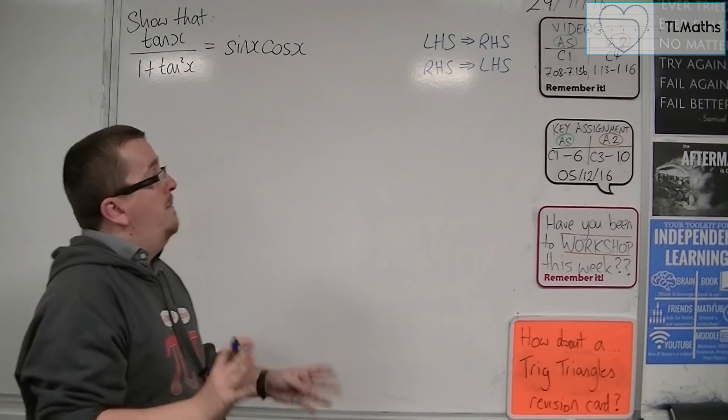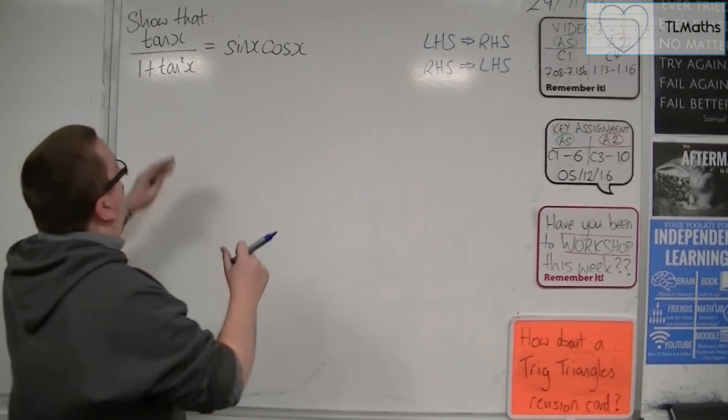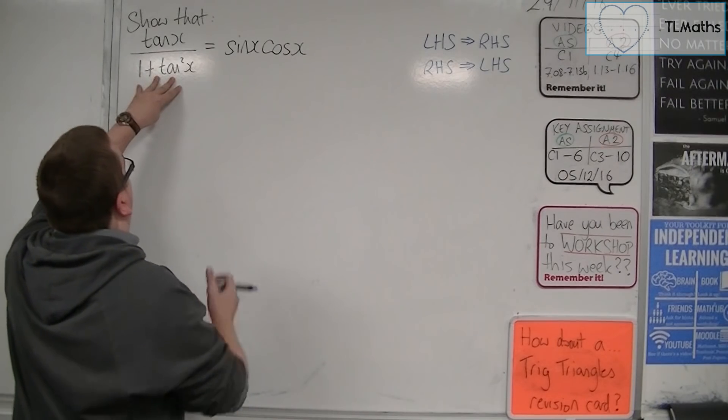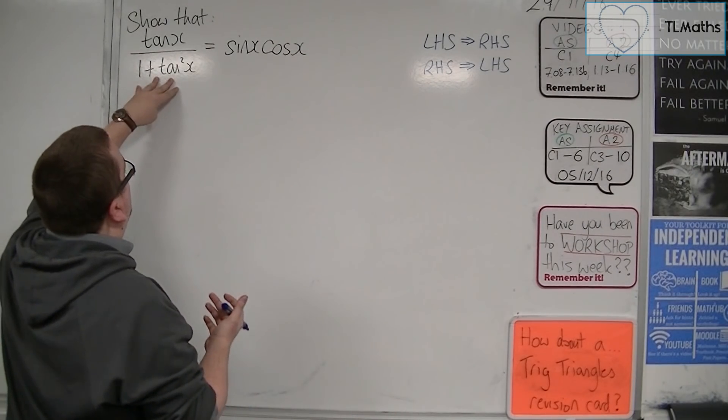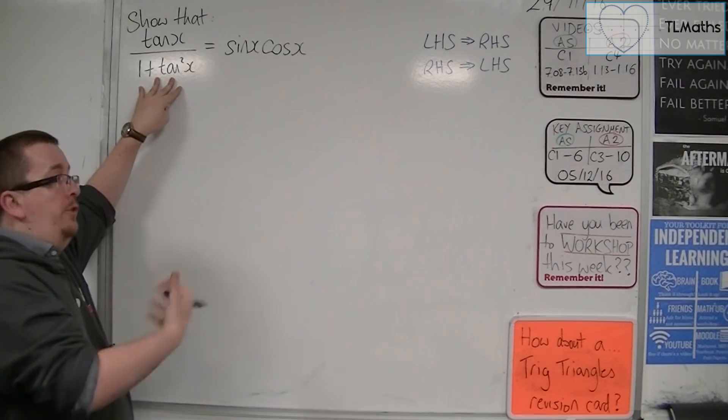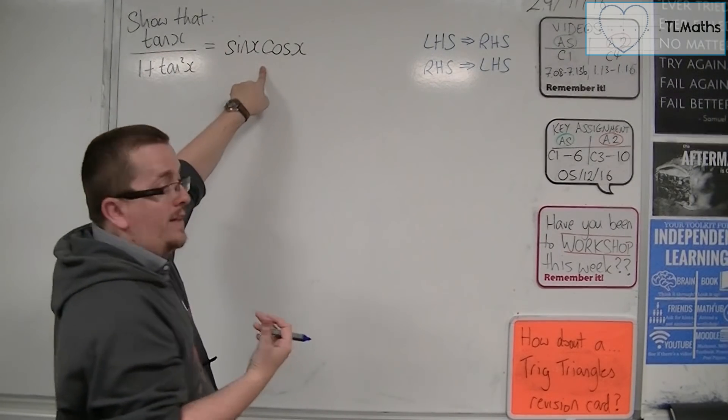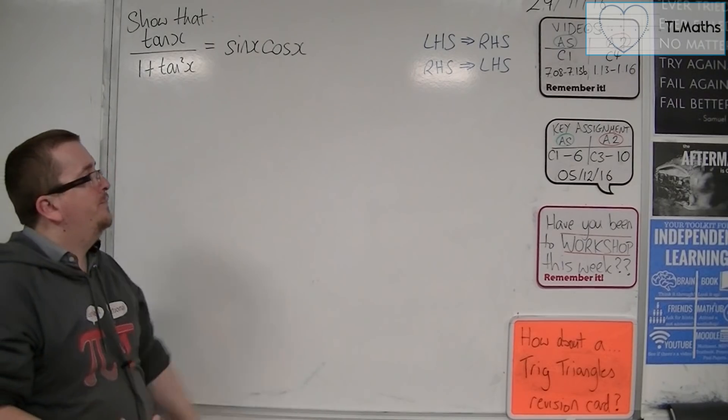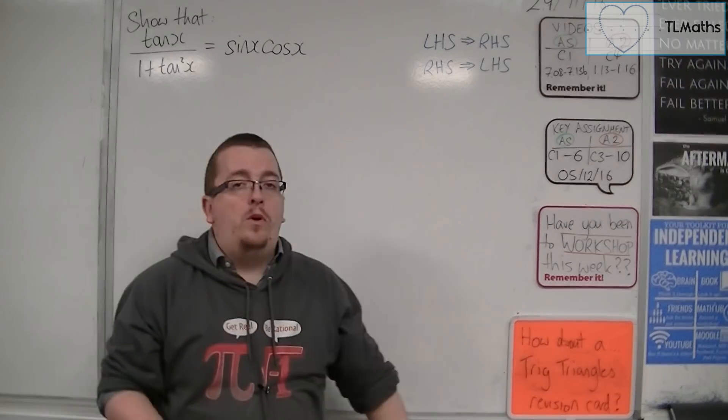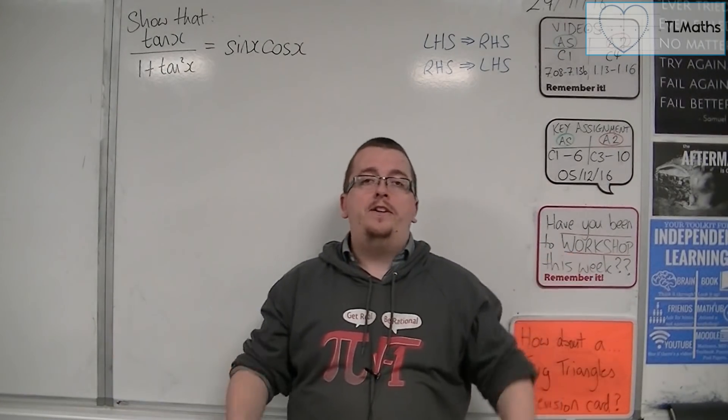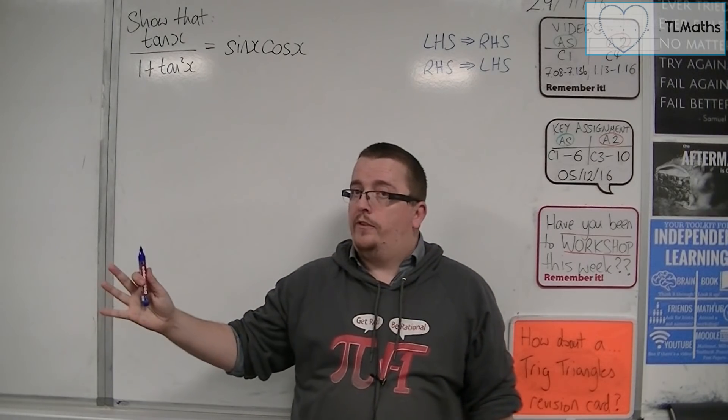So, by logical deduction here, I mean that you are working with, say, tan x over 1 plus tan squared, and you adapt it and use your algebraic knowledge and your trig knowledge to get it into looking like that, into that format. So, you can either work from the left-hand side to the right-hand side, or the right-hand side to the left-hand side.